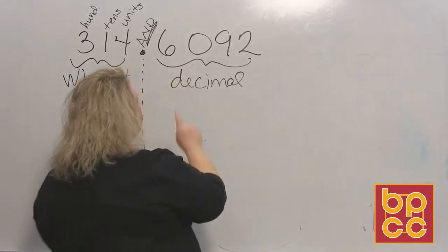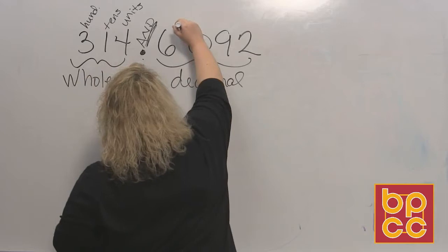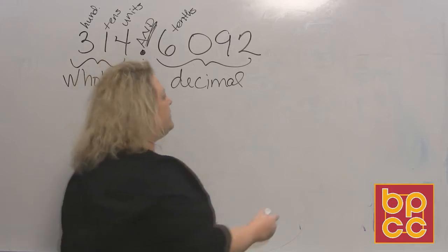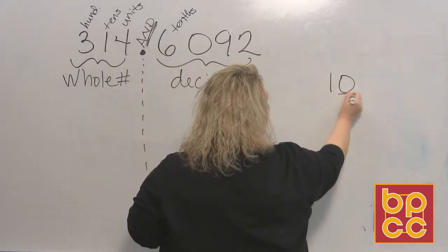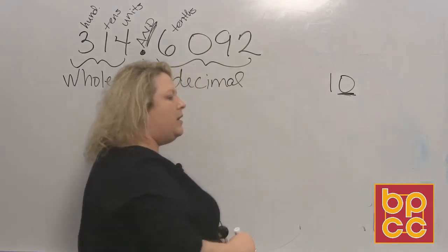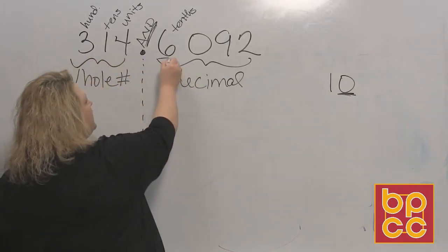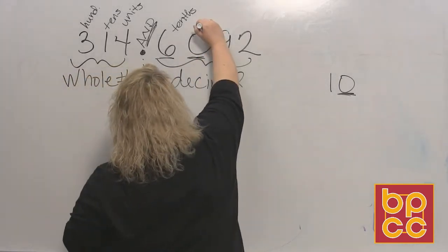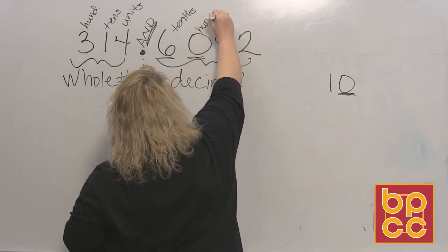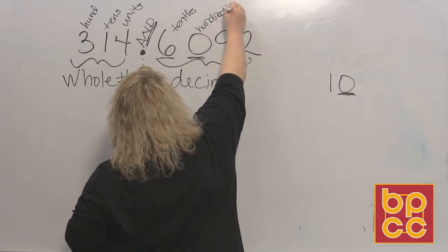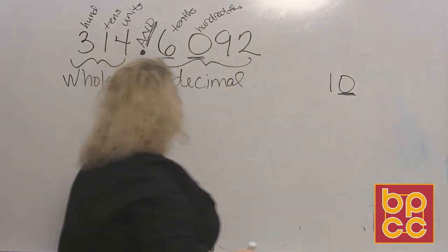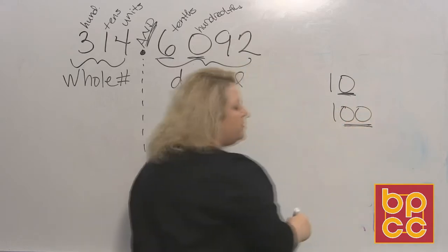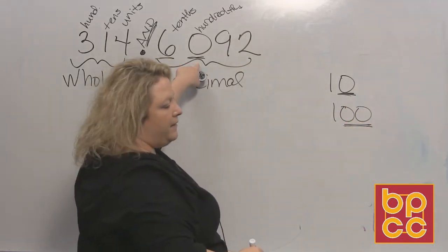The six is one digit behind the decimal, which represents tenths. The reason why it represents tenths is that the number ten has one zero — that is one space behind the decimal point. Our next place is hundredths, so that is zero hundredths. The reason it's hundredths is because the number one hundred has two zeros, which is two digits behind the decimal.